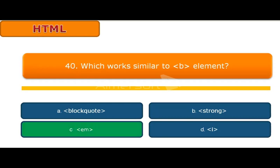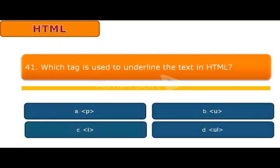Question 41: Which tag is used to underline the text in HTML? A P, B U, C I, D UL. Answer is U. U is used to underline the text in HTML.